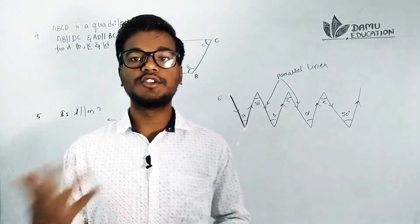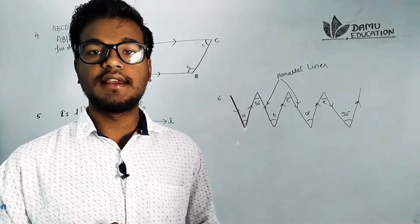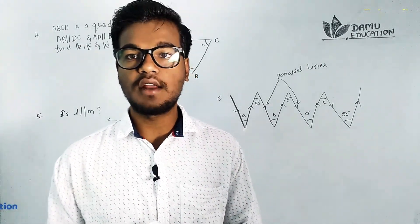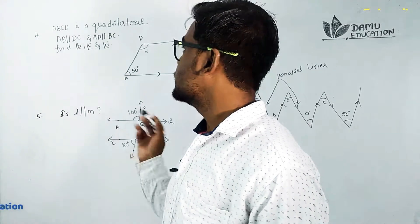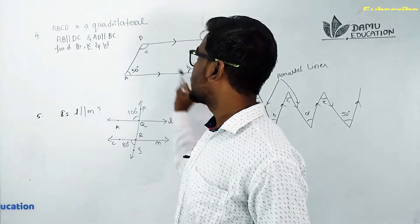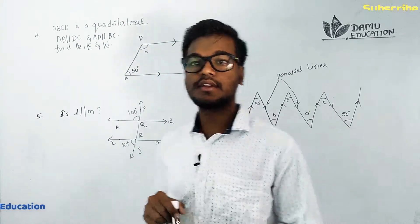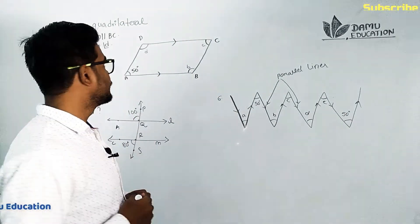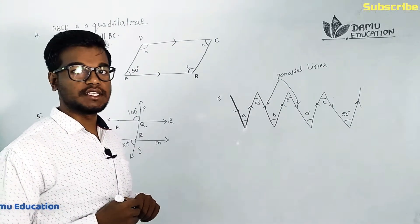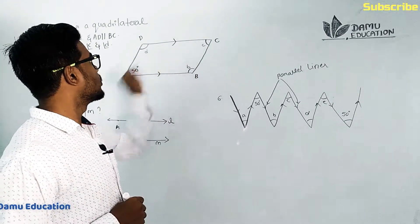Hello viewers, in this module we are going to discuss the solutions for the fourth, fifth, and sixth questions. The question involves quadrilateral ABCD, where AB is parallel to DC and AD is parallel to BC. Angle A is given as 50 degrees, and we need to find angle B, angle C, and angle D.